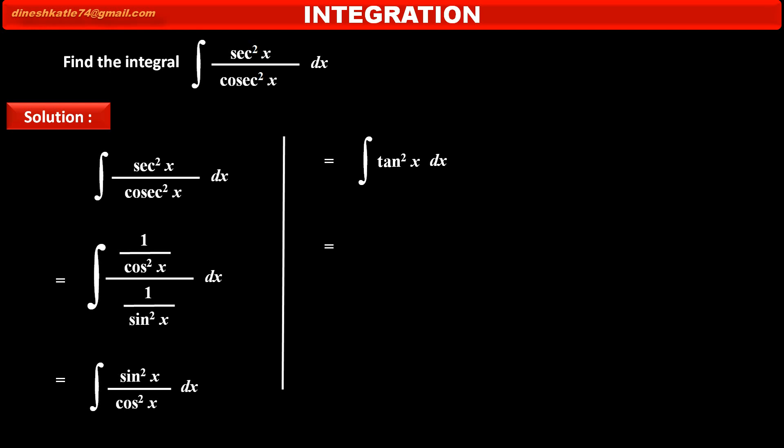Since we don't know the formula of integration of tan square x, we have to replace this term tan square by using identity as integration of sec square x minus 1.